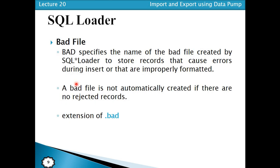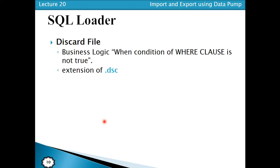The bad file stores records that SQL Loader could not insert due to errors during the insertion process. The bad file is automatically created if there are any rejected records, and its extension is .bad. The discard file is used when a WHERE clause condition is not true due to business logic, and its extension is .dsc. These are the main file types in SQL Loaders.